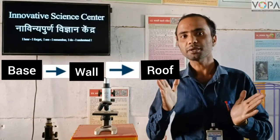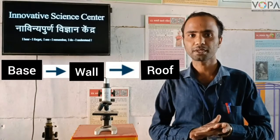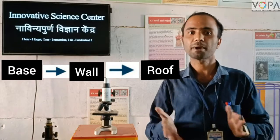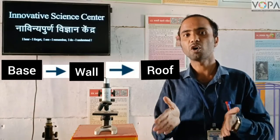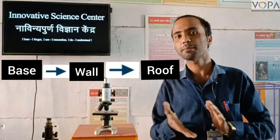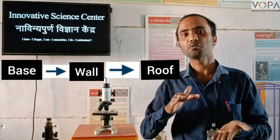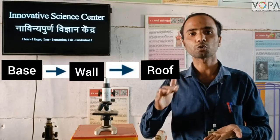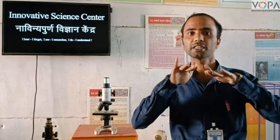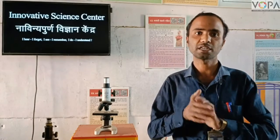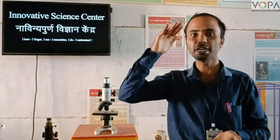When we make a building, first we have to prepare the base of the building. After that, we construct a wall on that base. After that, we make a concrete roof on it. In this way, a whole building is prepared.